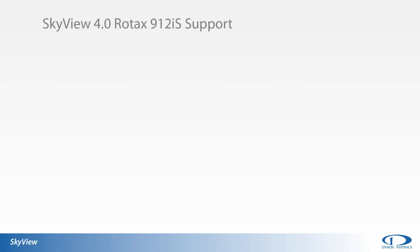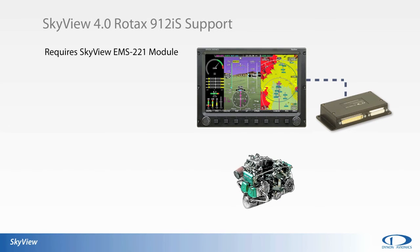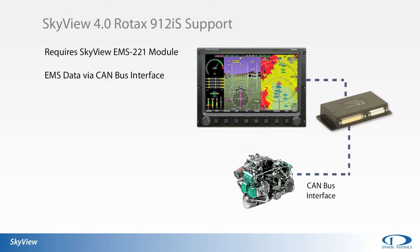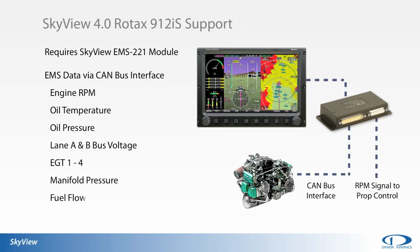In conjunction with the release of the EMS 221 engine monitoring module, SkyView version 4.0 firmware can now support the new Rotex 912IS engine. Rotex 912IS engine parameters are communicated to the SkyView EMS 221 module via computerized CAN bus. These parameters include engine RPM, oil temperature, oil pressure, lane A and B bus voltage, EGT for cylinders 1 through 4, manifold pressure, and fuel flow.